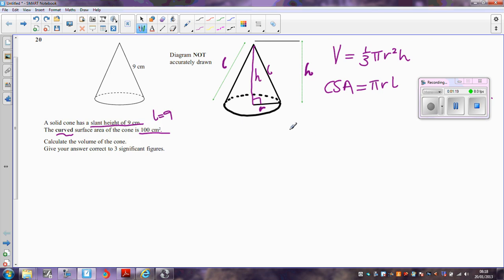First of all though, the curved surface area is pi r l. In other words, 100, which is the curved surface area, is equal to pi times the radius, which we don't know, multiplied by l, the slant height, and the slant height is actually 9. That's easier if you write that as 100 is equal to 9 pi r.